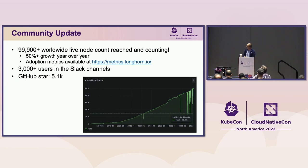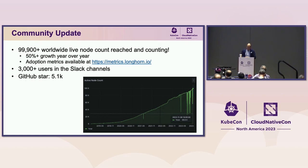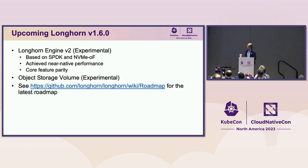On the community side, we have nearly 100,000 worldwide live nodes right now, maintaining a very high growth rate of 50-plus percent. You can find adoption metrics at metrics.longhorn.io. We have more than 3,000 users in the Slack channel and 5,000-plus stars on GitHub.